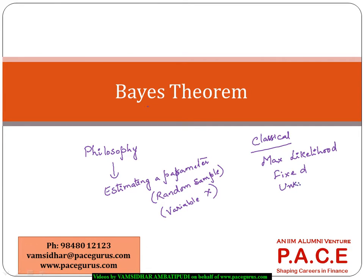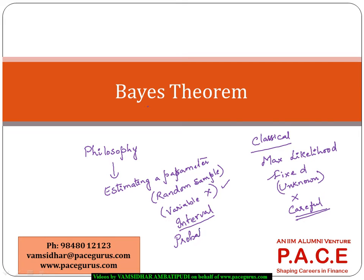The Bayesian mechanism simply says any parameter that we are estimating could still be a random variable. Though the classical mechanism says it is fixed — it could be an unknown quantity, but it is fixed, not a random variable. The Bayesian philosophy says that any parameter we are estimating could very well be a random variable, which means I can define an interval for this kind of a parameter. That's where the world of Bayesian statistics has created new waves, and our understanding of statistics changed because of this Bayesian philosophy.